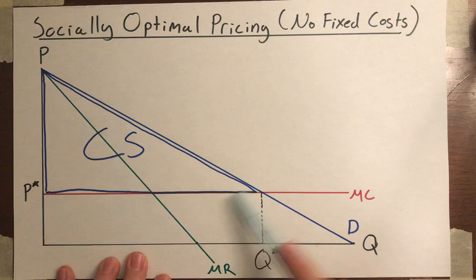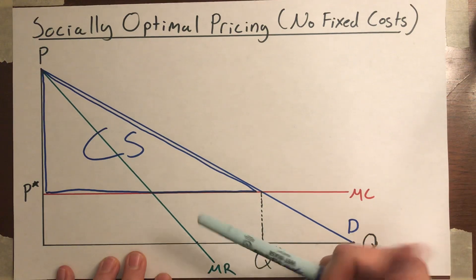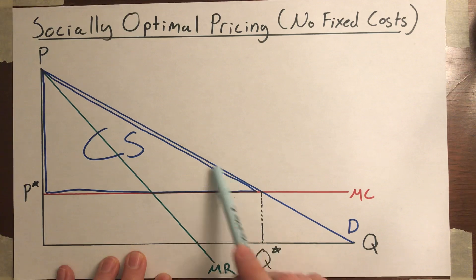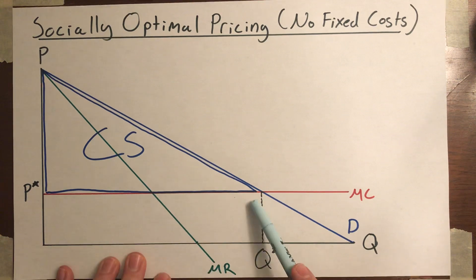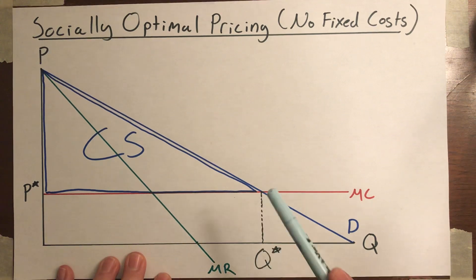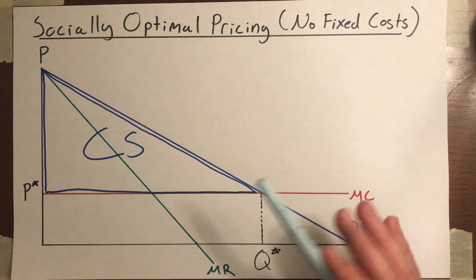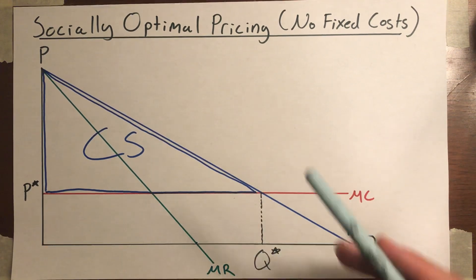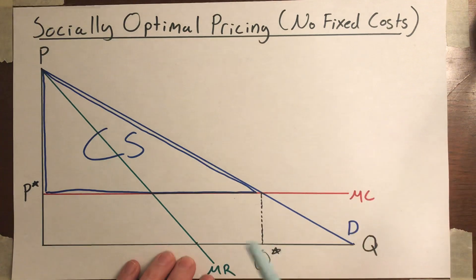Good news is there's no deadweight loss under socially optimal pricing. Bad news is there's also no economic profits for the monopolist. This is why the monopolist doesn't want to charge the socially optimal price — because if they do that, they get nothing. They lose all of their economic profits, which is the reason why they jumped into the market in the first place. So this is what's socially optimal assuming there's no fixed costs, but it's not what we expect to happen.